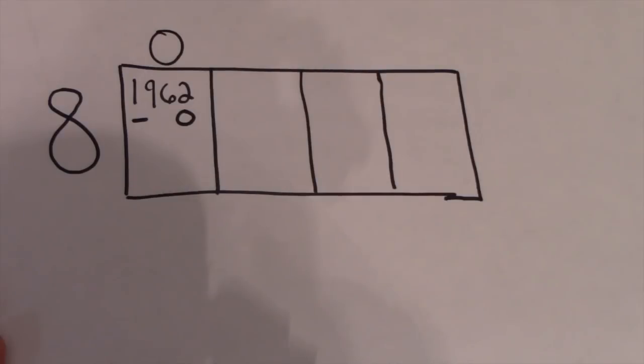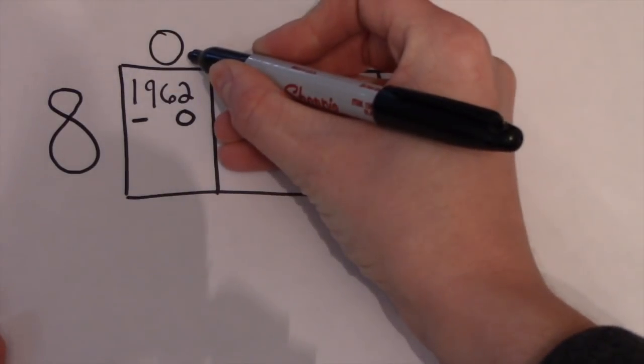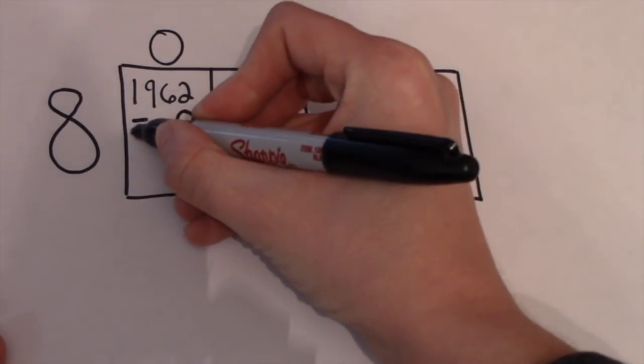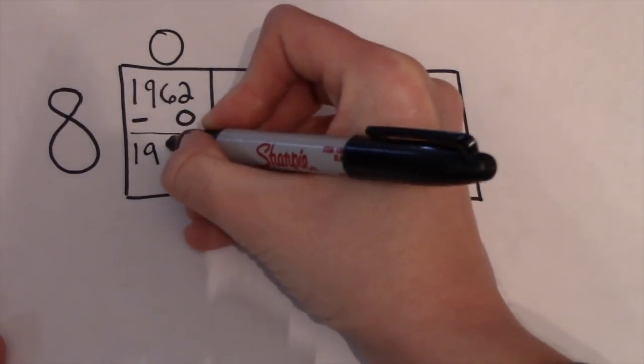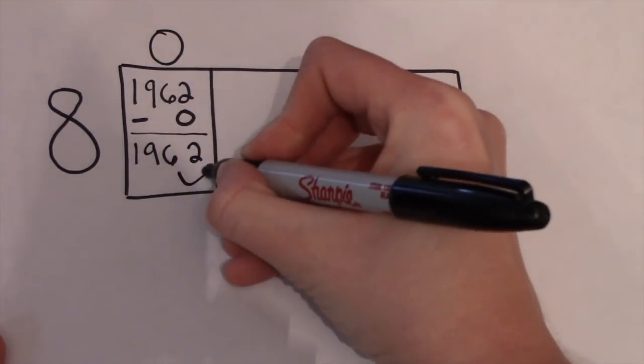Taking a look at our very first multiple, 8,000 is already over 1,962. Therefore, we're going to put a zero up top. We're going to go ahead and multiply 8 times 0 and subtract that bad boy and we get 1,962, surprisingly.